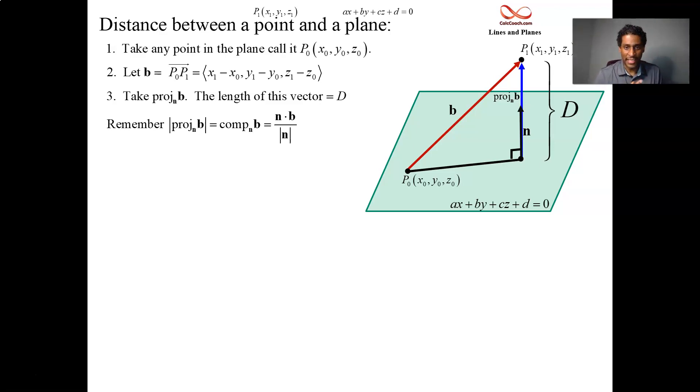I'm calling the distance D, capital D here. Since D must be positive, then if it happens to be that this numerator N dot B is a negative, just make sure that you slap absolute value bars around it. Alright, N is ABC, B is the X1 minus X0 and Y1 minus Y0 and Z1 minus Z0. We got them.